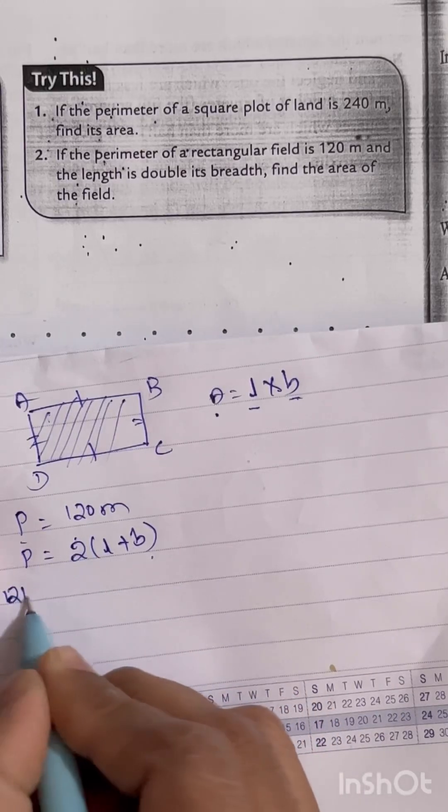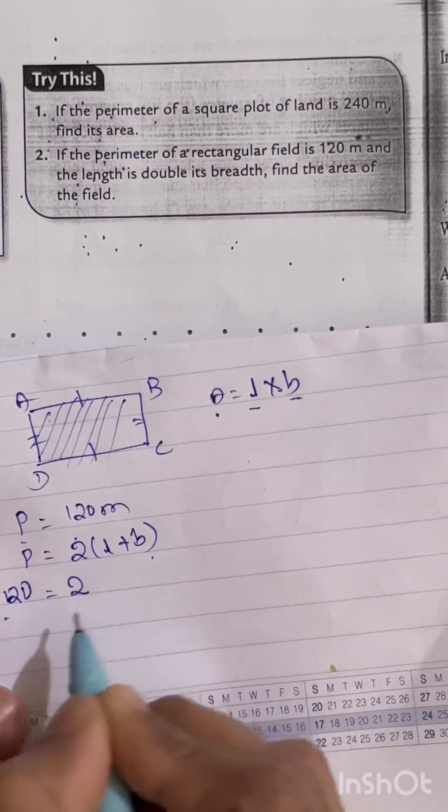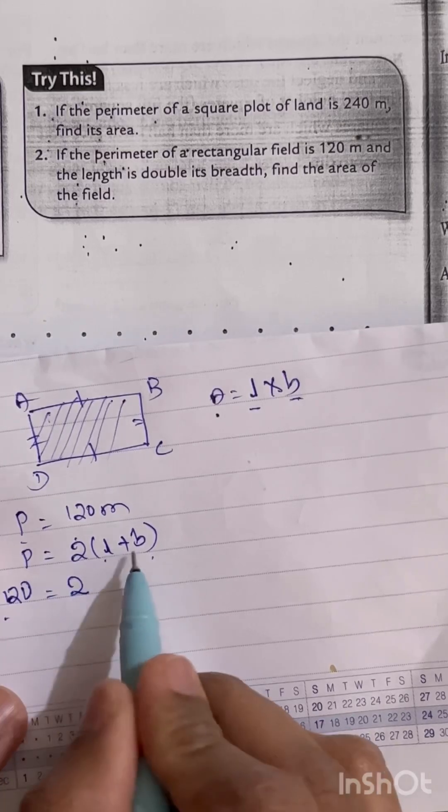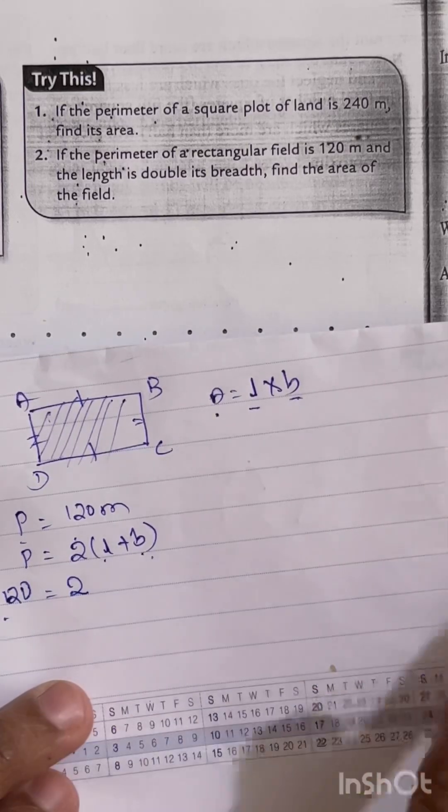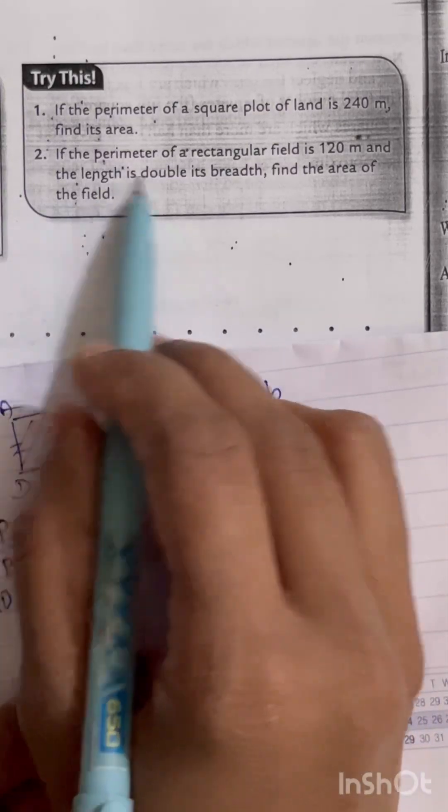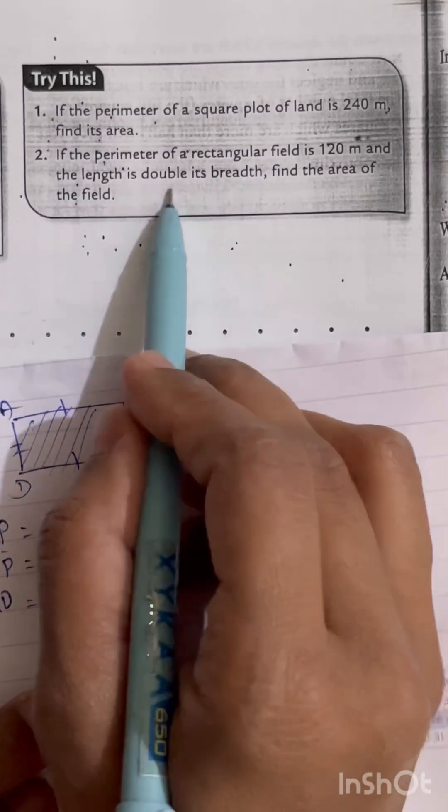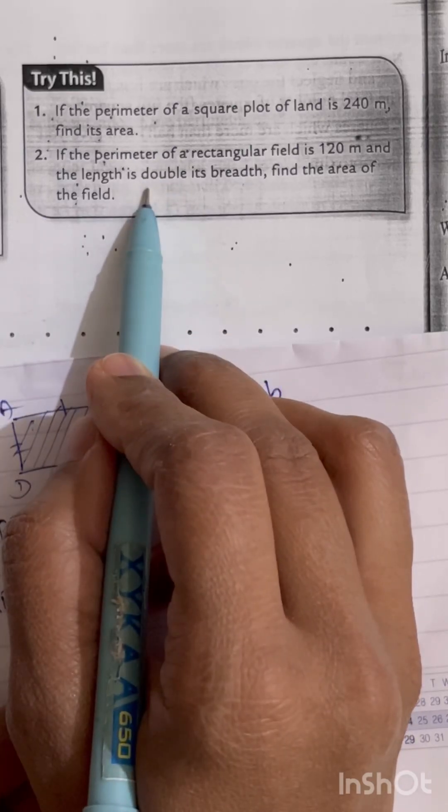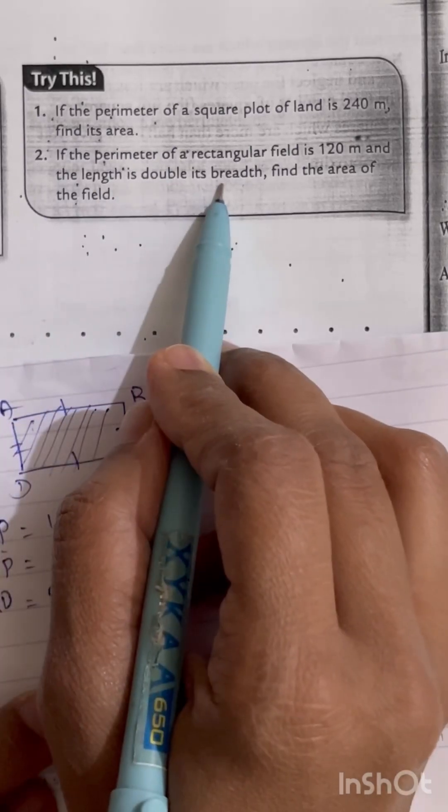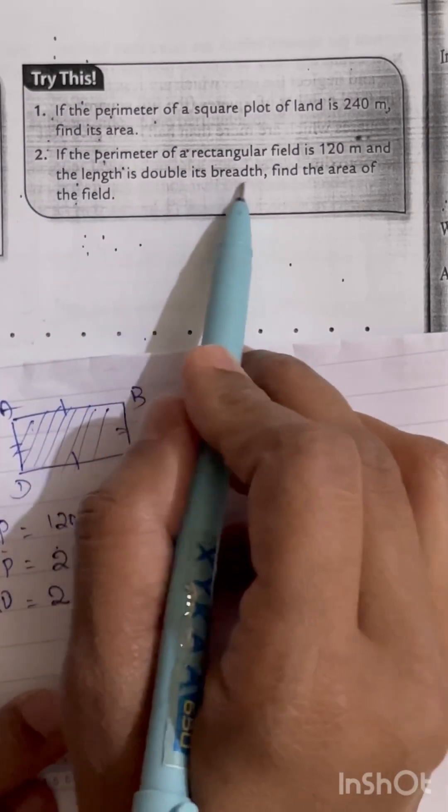Here they have given only the perimeter value, that is 120 equals 2. Again, we don't know length and breadth values here. But they have said this field length is double its breadth. Again, a hint has been given for length, but for breadth they didn't give any hint.